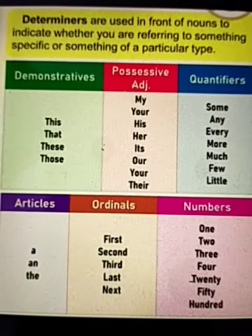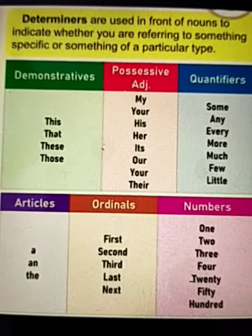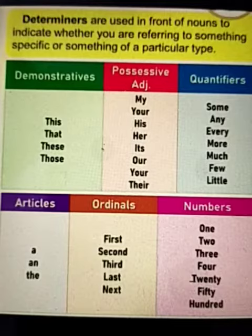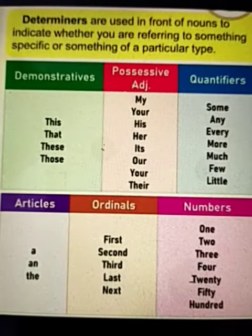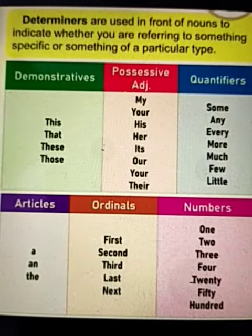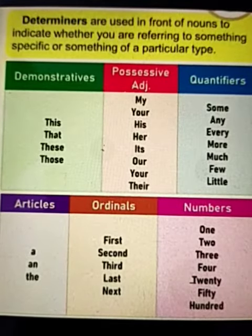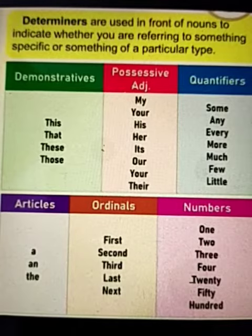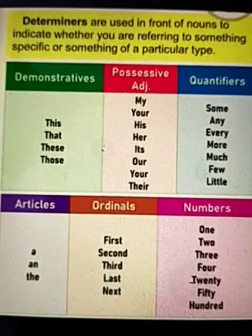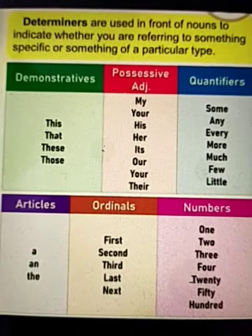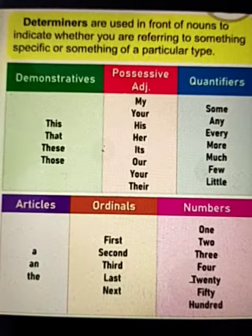Quantifiers: some, any, every, more, much, few, little. Articles: a, an, and the. Ordinals: first, second, third, last, next. And numbers: 1, 2, 3, 4, 20, 50, 100, etc.